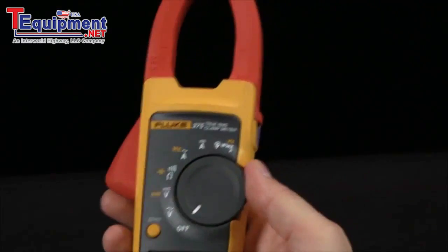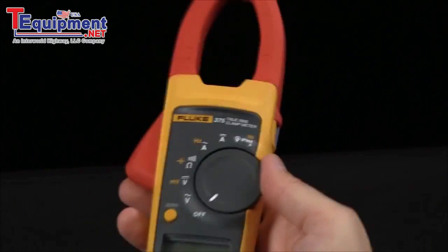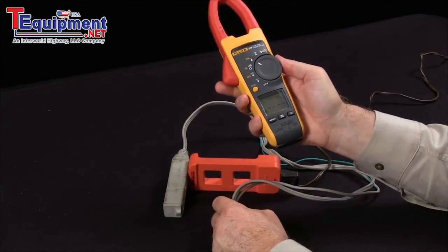How do I measure the current flow going through a power cord and out to a load? Let's set the clamp meter to read AC amps.